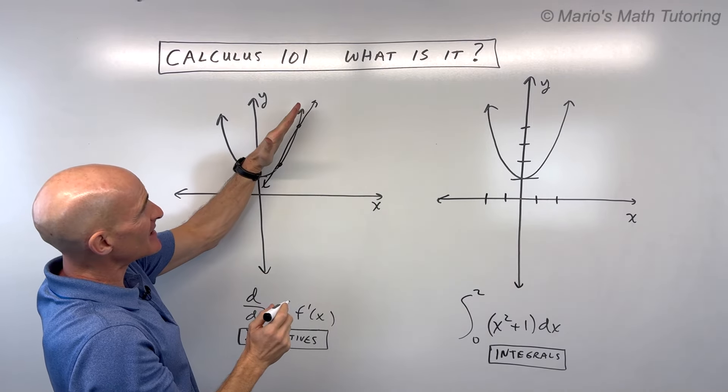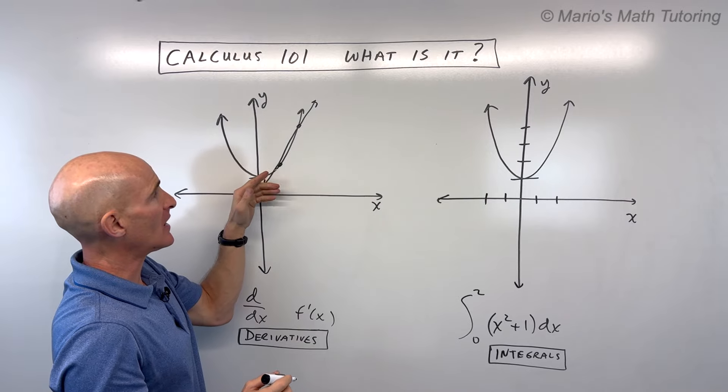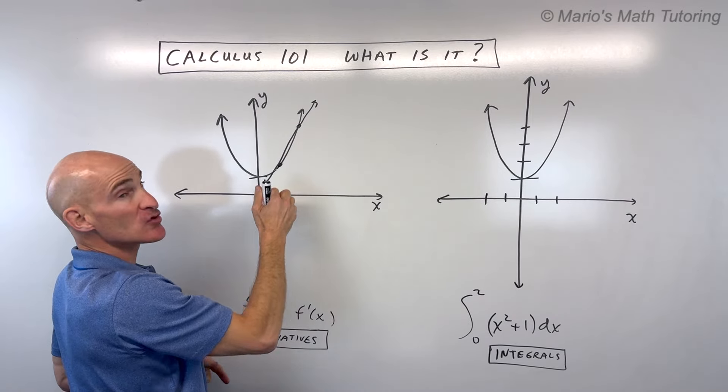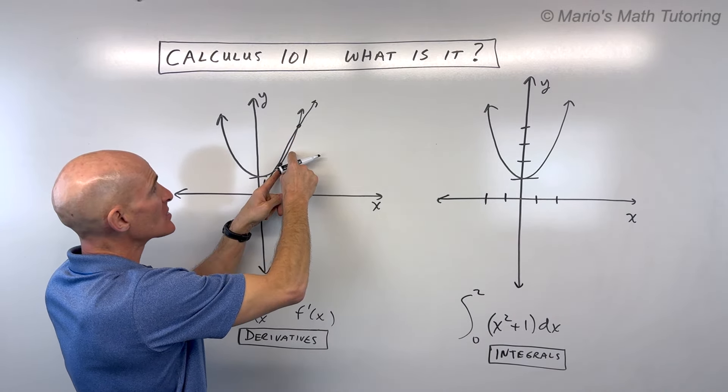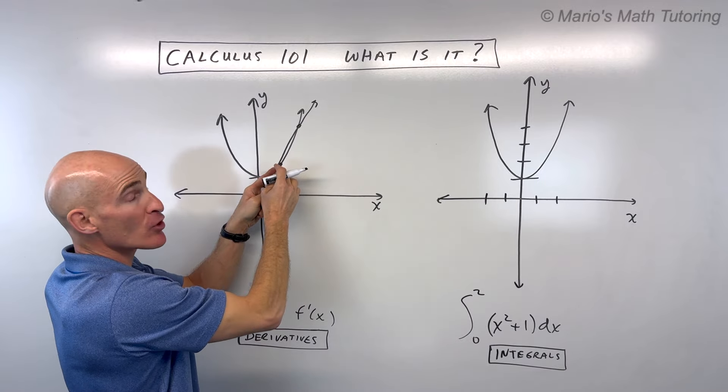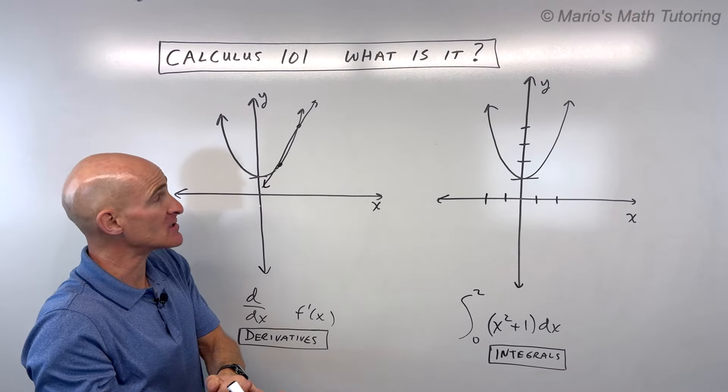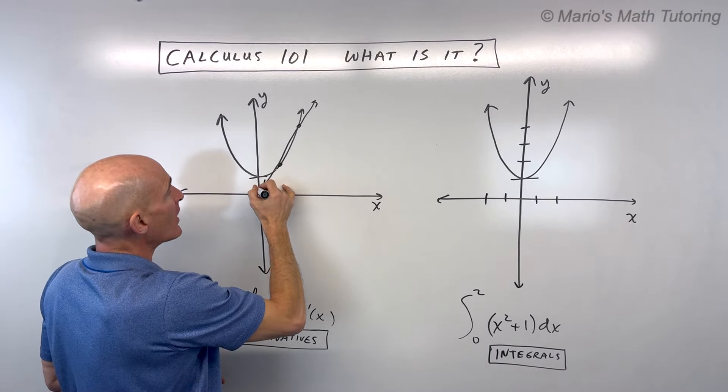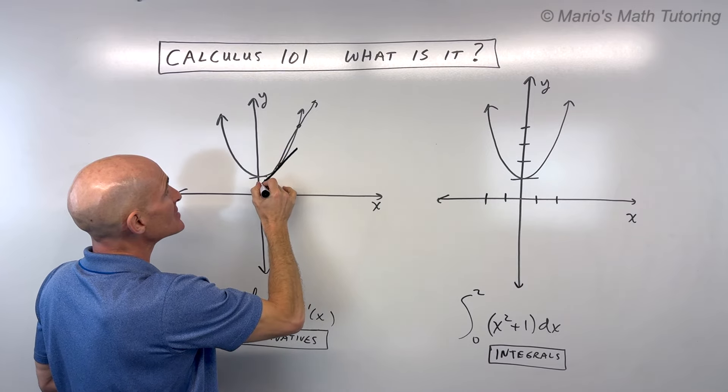And so what happens is instead of getting the average rate of change, the slope of the line between these two points, as this point here gets closer to this point, and that distance approaches zero. Again, we're talking about limits. You're going to get what's referred to as the instantaneous rate of change.